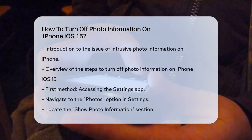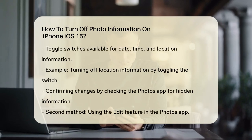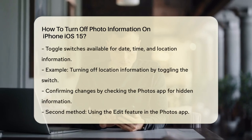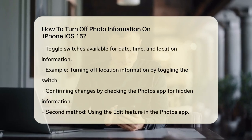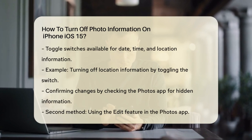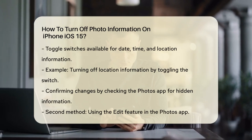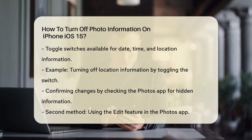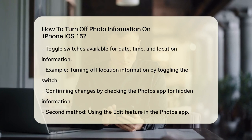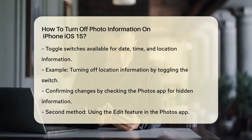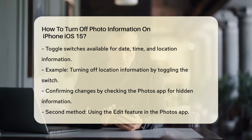Once you're in the Show Photo Information section, you'll see a list of elements like date, time, and location. Each of these elements has a toggle switch next to it. Simply tap on the switch to turn off the information you don't want to see. For example, if you don't want the location to be displayed, just toggle off the location switch. The switch will turn white, indicating that the information is now hidden.